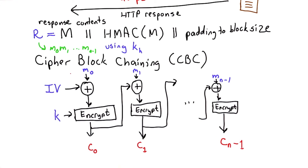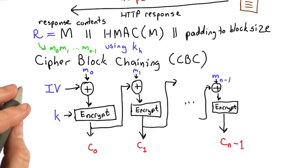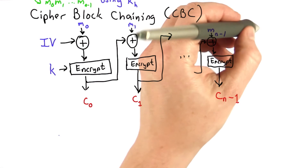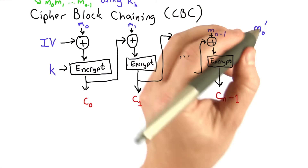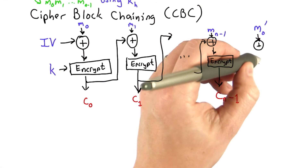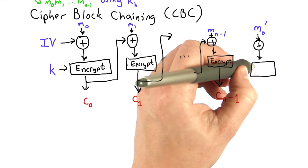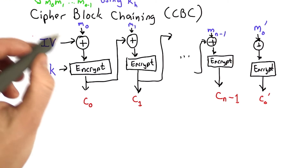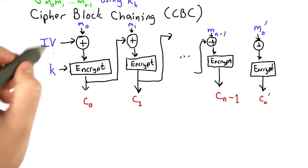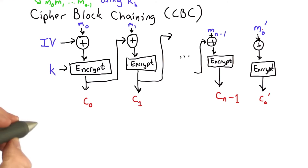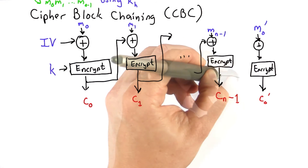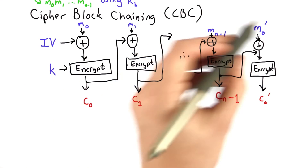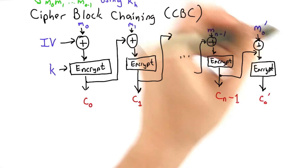That's the way the first response is done, but in a session there might be multiple responses. When the next response is done, we don't want to do the whole handshake protocol again. So the next message block, M-prime-0, will be encrypted using CBC mode again, producing the ciphertext block at the beginning of the next message. We need an IV here, and we don't want to use the same IV again — that would reveal if M0 equals M-prime-0. So TLS uses the last ciphertext block of the previous message as the IV for the first block of the next message.